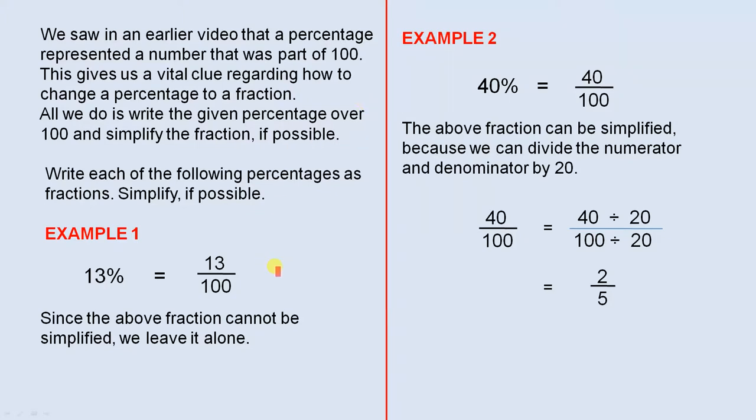So for the first example, 13% gives us 13 out of 100, that's percent. That's what the meaning of percent is, per 100. So the fraction is naturally 13 over 100. Since the above fraction cannot be simplified, we leave it alone.